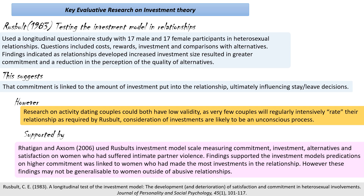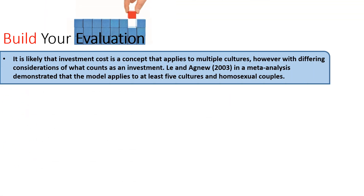So how might we build these evaluations up? Well, it's very likely that investment cost is a concept that will apply across cultures. People do similar things to invest, such as have children, buy homes, and build up social networks as a couple. But there might be some differing considerations about what counts as an investment — for example, people in Western societies might view giving up their own time as more of an investment, while people in collectivist societies might feel that building a strong family connection is a larger investment. Research by Lee and Agnew in a very large meta-analysis showed that the model applies in at least five countries, and the study also included homosexual couples.